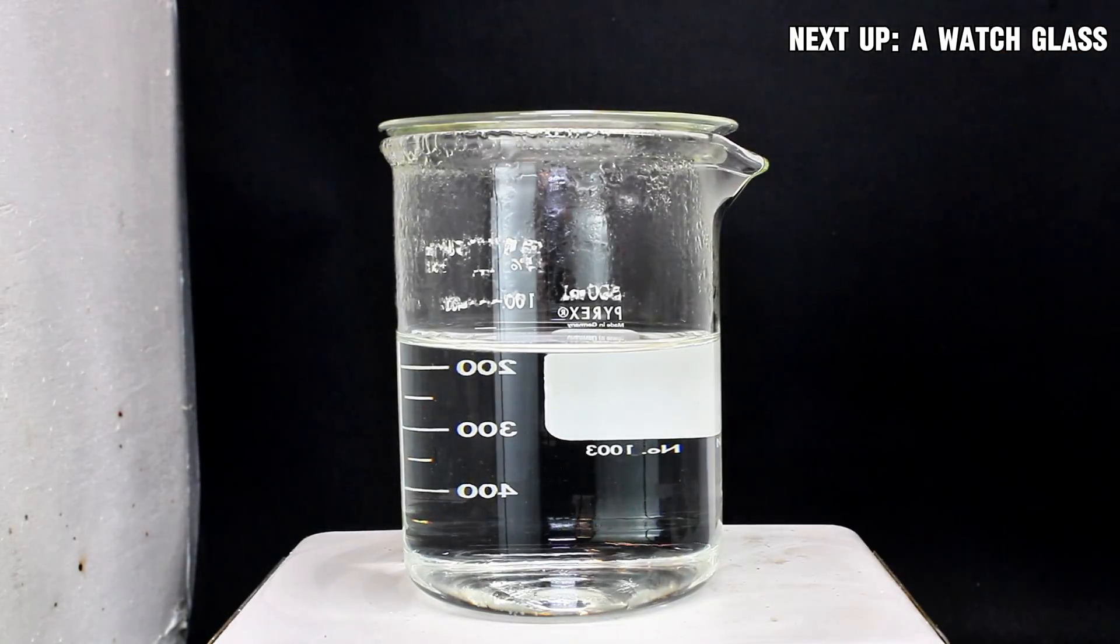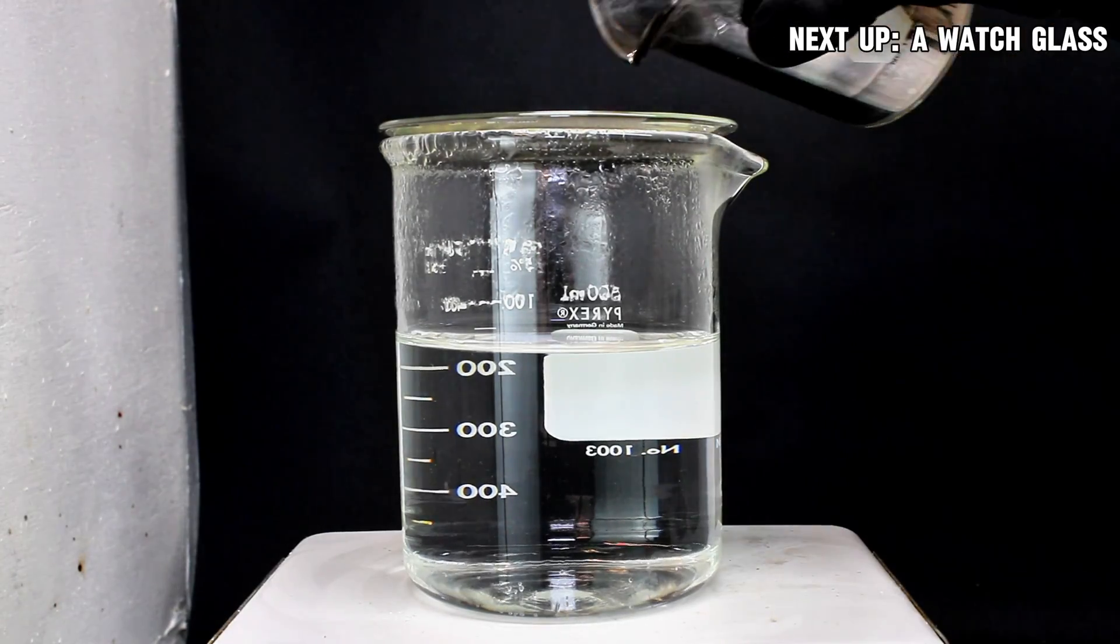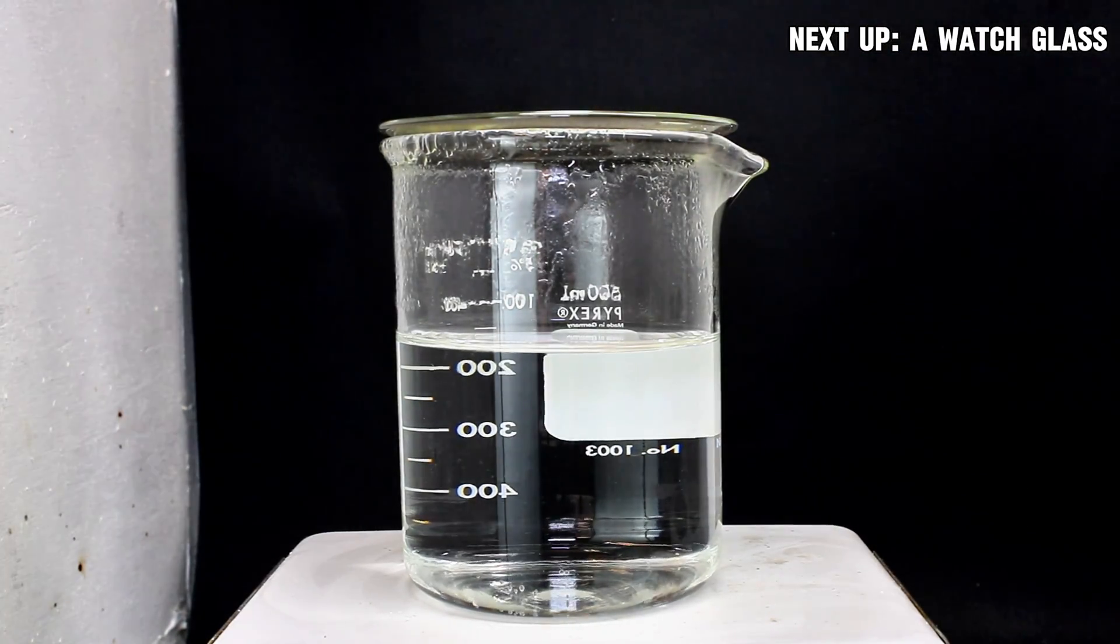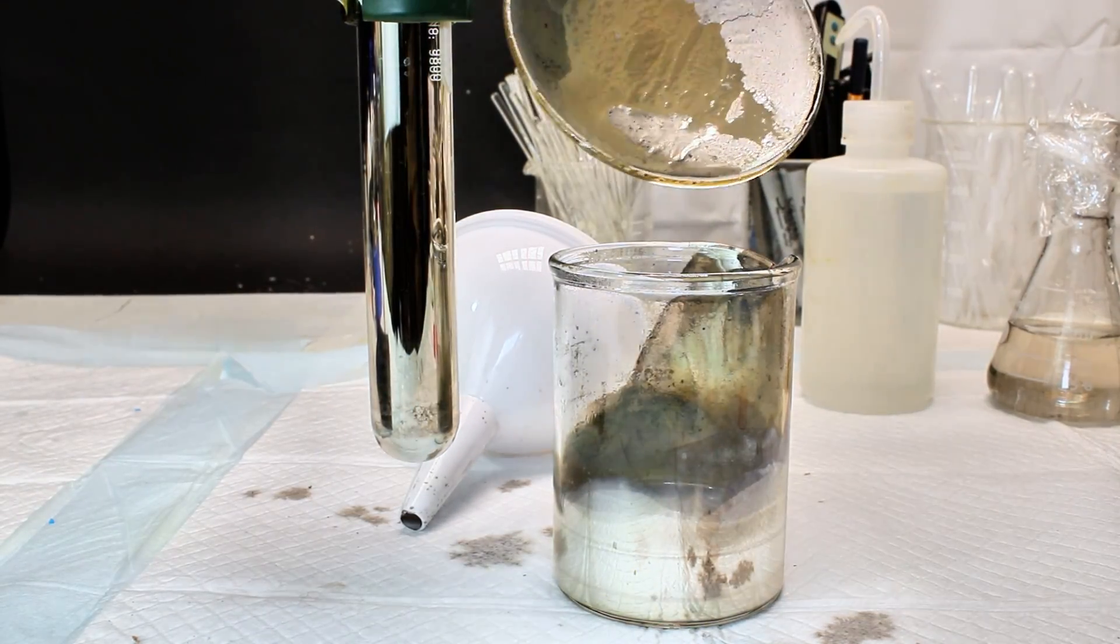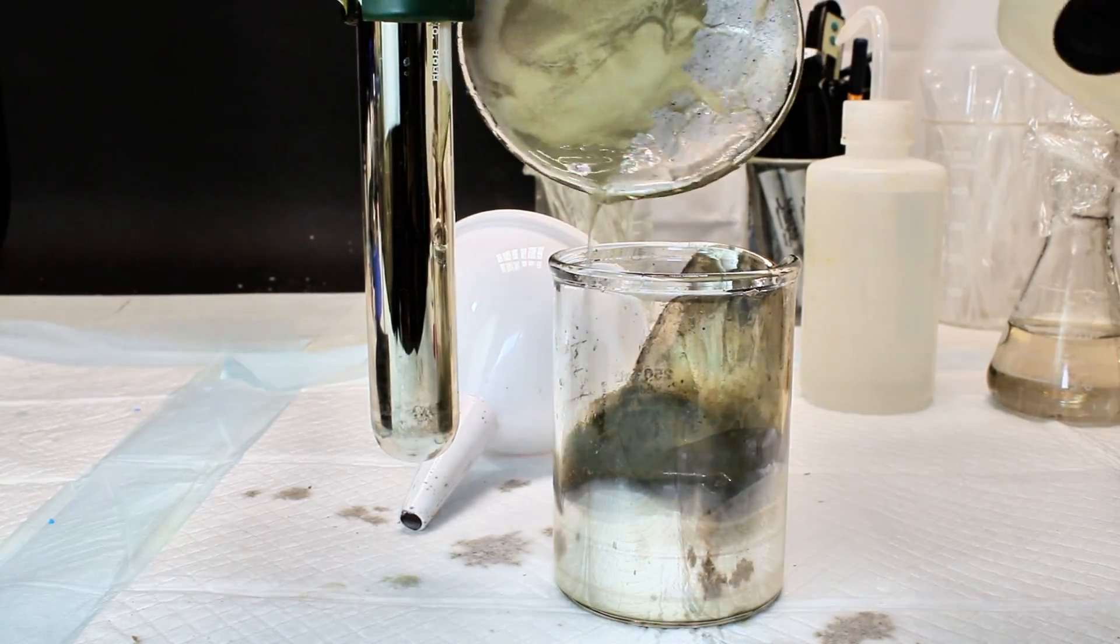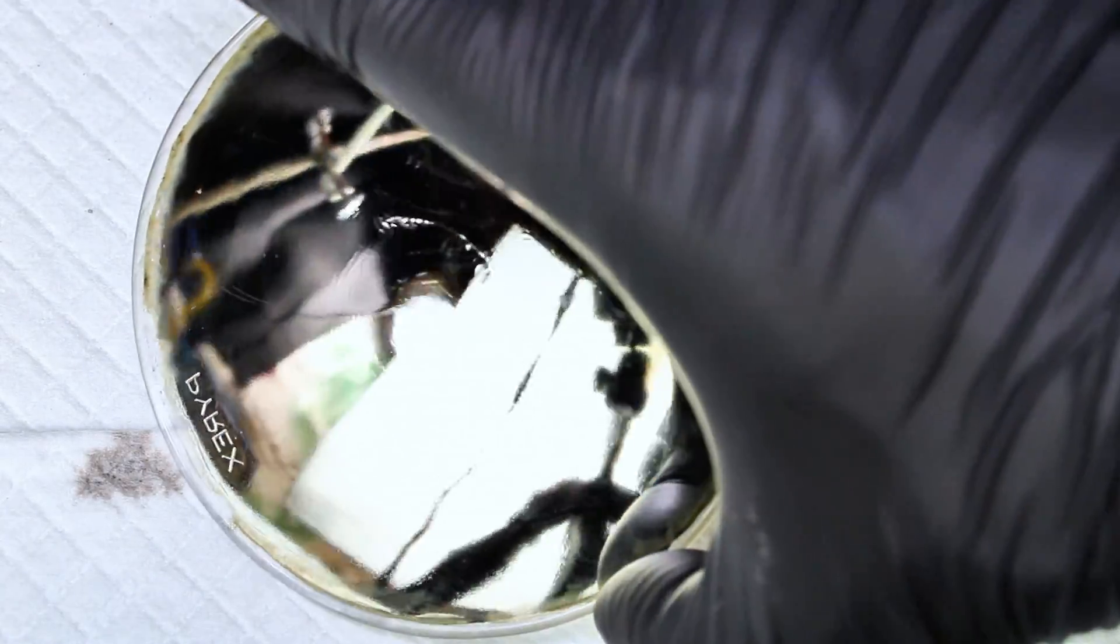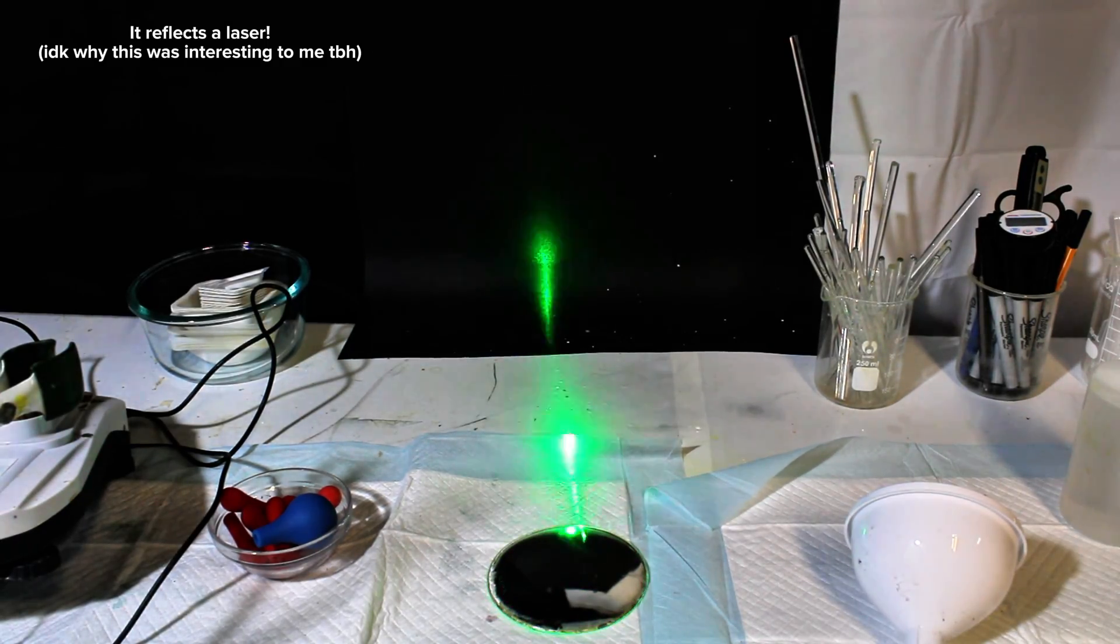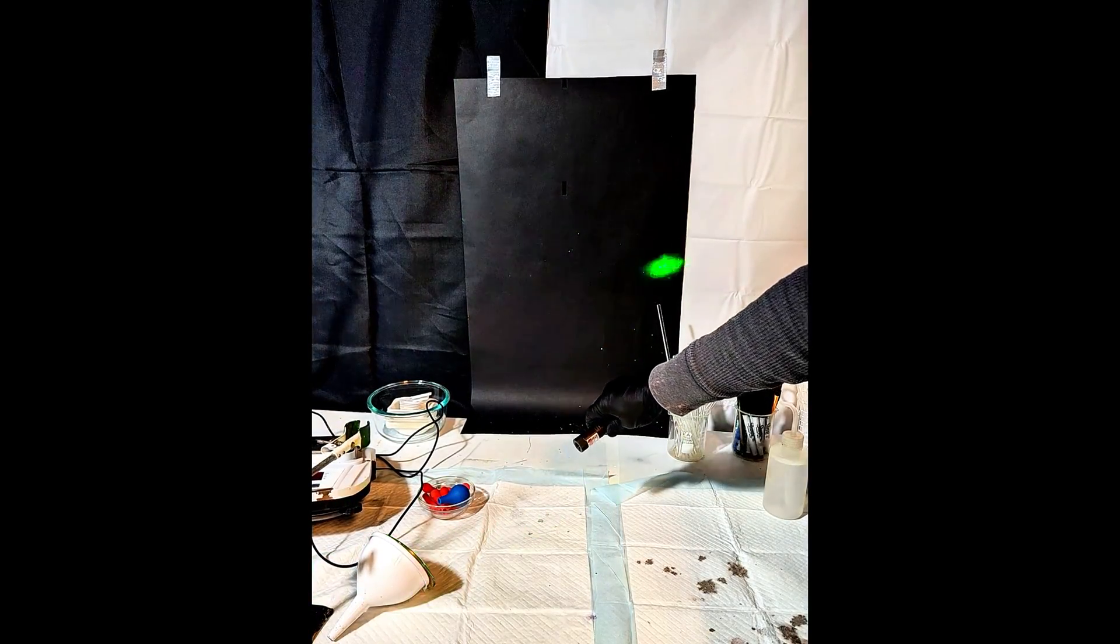Now that I had a proof of concept, I started looking around for other things that might be fun to give a mirror finish. My first idea was a watch glass, which I plated by simply adding some Tollens reagent to the glass and then placing it on top of a beaker of boiling water for a few minutes. This also gave a beautiful mirror finish, and given the fact that it's a watch glass, this one could actually make a somewhat practical mirror. I messed around with this one for a while using a green laser pointer, which as you might expect, gave a very good reflection.